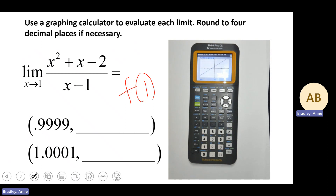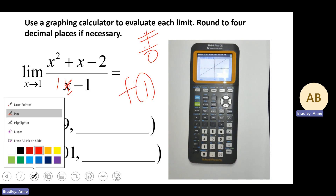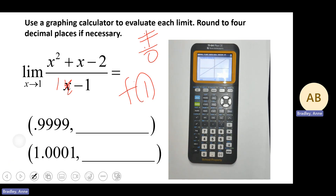If we were to evaluate f of 1, substituting 1 for x would give us 1 minus 1 in the denominator — some value over 0. We can never have 0 in the denominator of a fraction, so f of 1 would be undefined. But what we're actually being asked to do is evaluate the limit as x approaches 1.